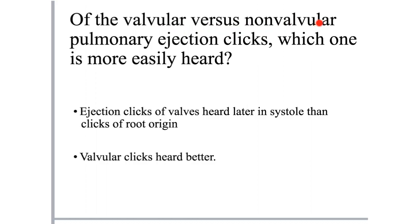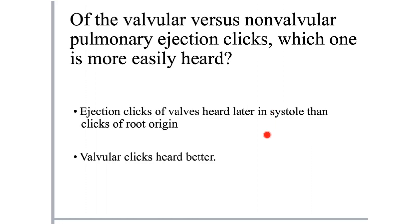Valvular pulmonary ejection clicks are heard later in systole than clicks of pulmonary root origin, so valvular clicks are heard better because there is greater distance from S1. Non-valvular pulmonary ejection clicks due to pulmonary hypertension occur very close to the first heart sound and almost merge with S1, making it difficult to separate the two sounds.